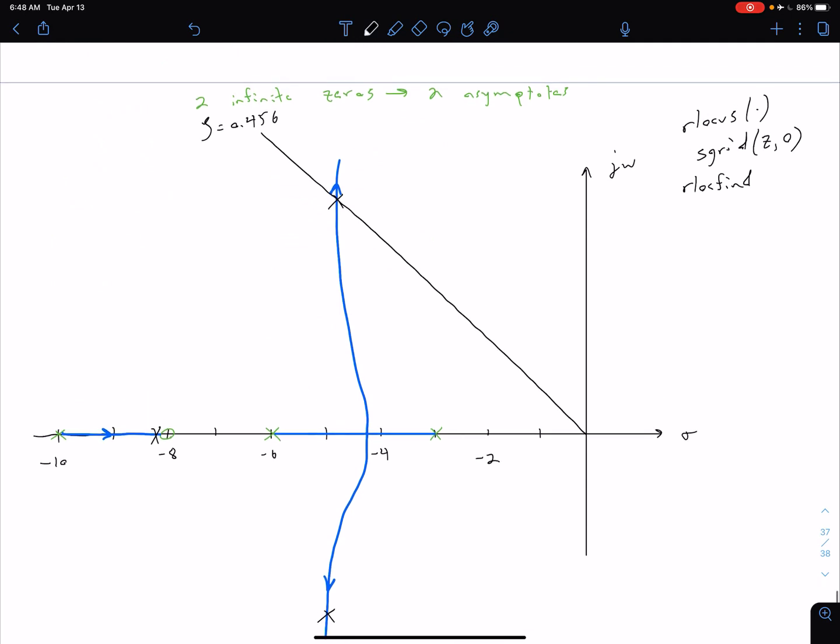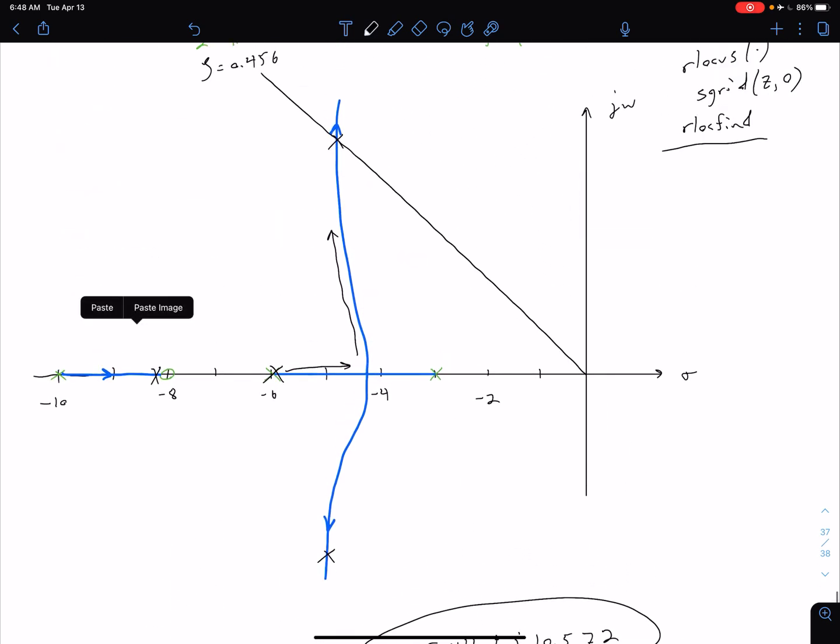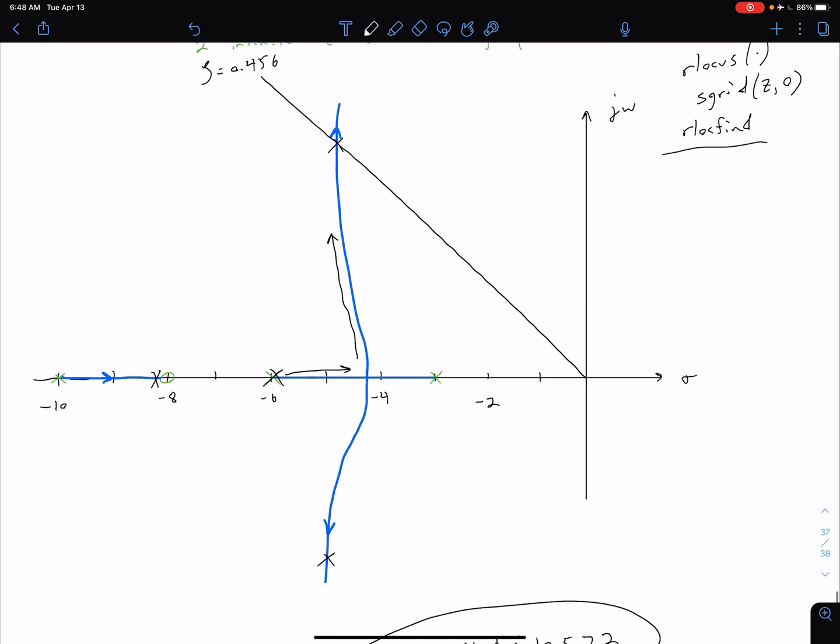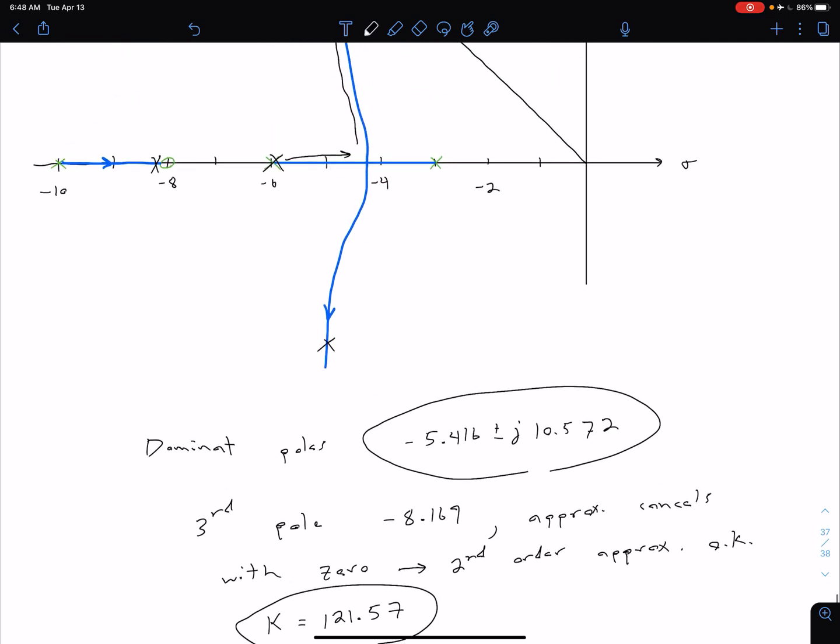So second order approximation. Okay. The one other piece of information that we get from this, our rlocfind function is the gain that gives us that position. So of course, our closing poles are starting here and then they're moving along this way. And then it's moving up this way until eventually we get to our desired location. And in this case, we find that our gain to get this point is approximately 121.57. Now, keep in mind, of course, there is some degree of error introduced based on the resolution I use when I plot this root locus. There is also some degree of error introduced by the user as we are selecting that point manually on the plot with the rlocfind function. So if you go through this example yourself, you might end up getting numbers that are slightly different. But of course, they should be more or less the same.